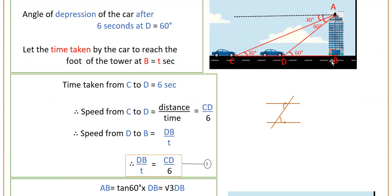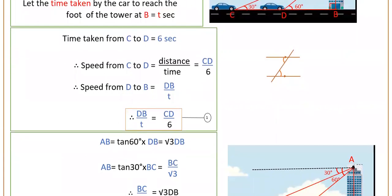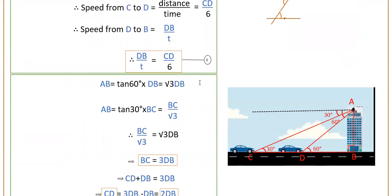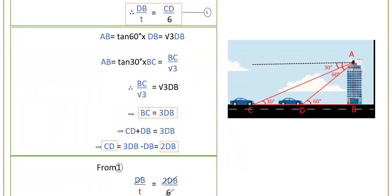Now we find the distances using the two right triangles. In triangle ABD, AB = tan60° × DB, so AB = √3 · DB. In triangle ABC, AB = tan30° × BC = BC/√3. Setting these equal: BC/√3 = √3 · DB, therefore BC = 3·DB. Since BC = CD + DB, we get CD + DB = 3·DB, so CD = 2·DB.